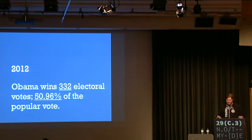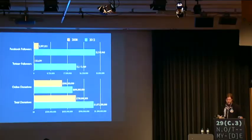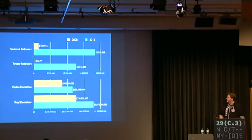A clear way to view the transition from 2008 to 2012 technology is to look at social media. On Facebook, in 2008 Obama had just over 2 million followers; that jumped up to 32 million, one of the biggest accounts on Facebook. On Twitter, which was just getting started in 2008 with about 125,000 followers, that jumped to over 22 million. These accounts were used to communicate with interested persons throughout the country. Online donations went from about $500 million in 2008 to $690 million in 2012 — a really big achievement, especially given the economic turmoil and uncertainty about how people would respond. Total donations in the 2012 campaign exceeded $1 billion.